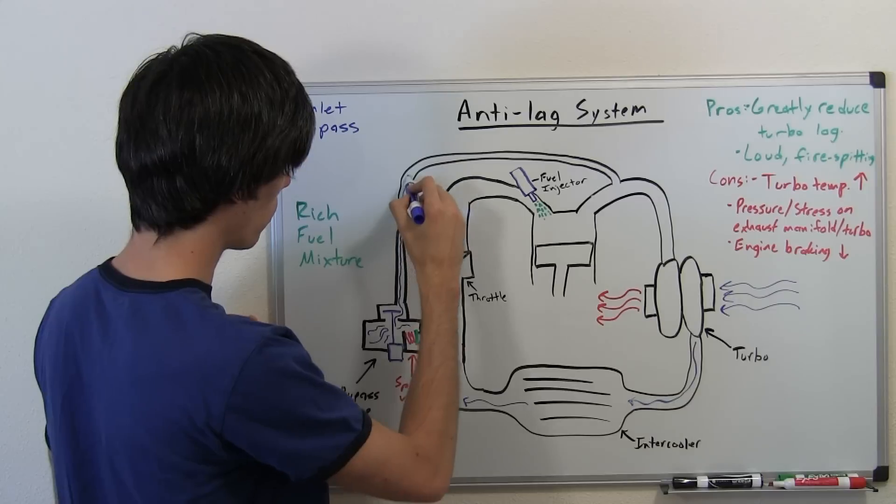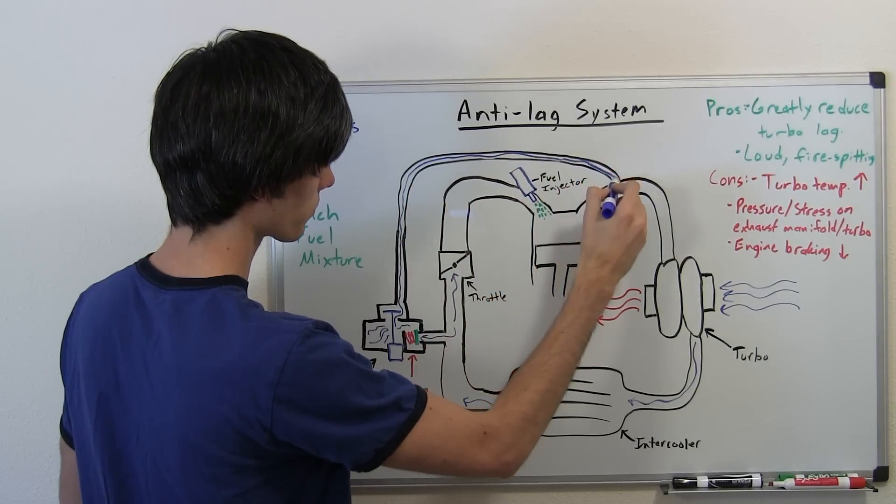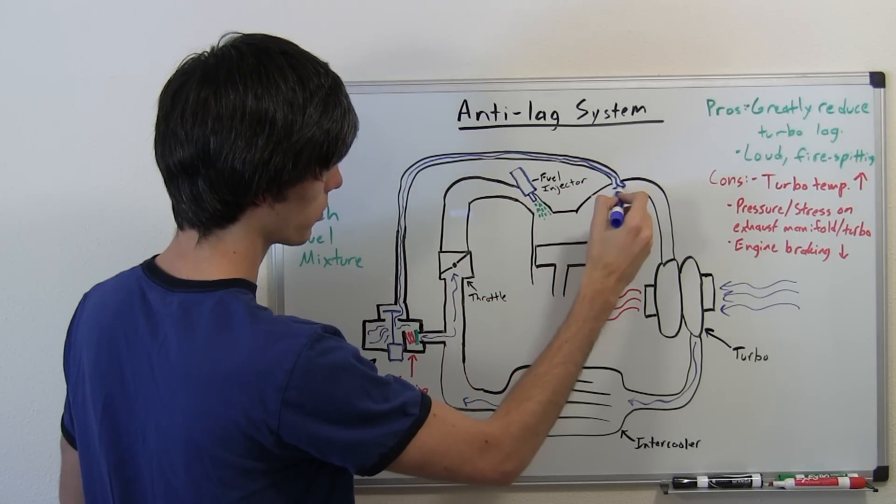The air comes all the way through this line, bypassing the engine, and comes out here into the exhaust manifold.